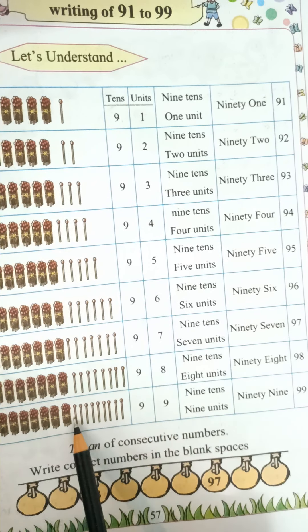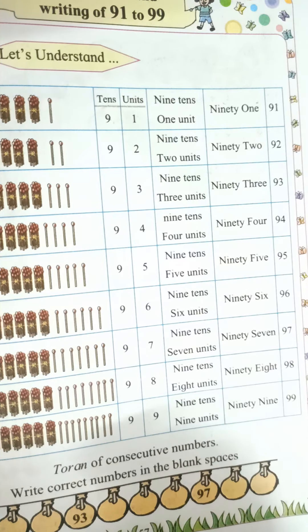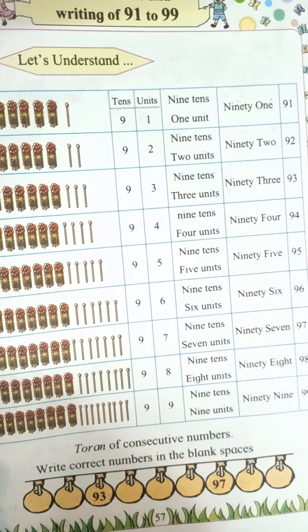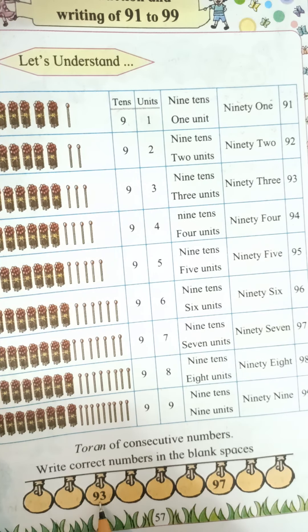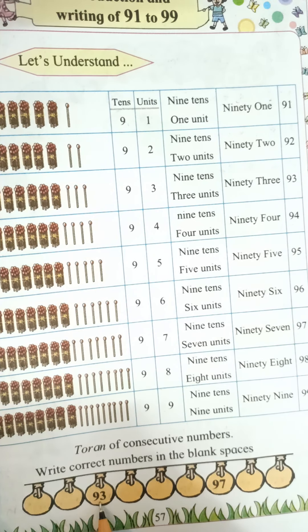Next: bundle of 10 are 9. So 9 in tens place. And for unit place, count: 1, 2, 3, 4, 5. 5 units. 9 tens, 5 units — 95. 9, 5, 95.